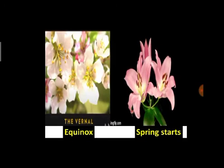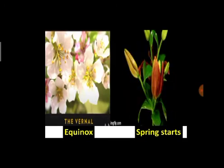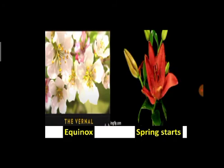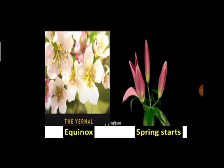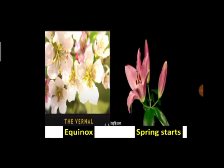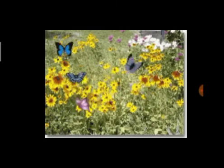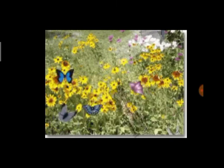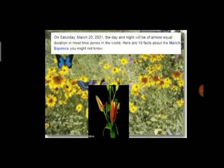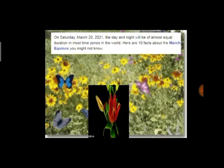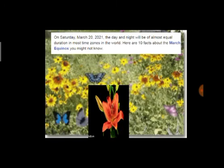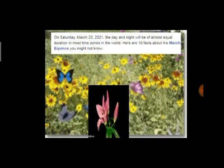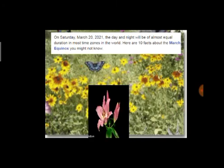Here you can see the spring equinox or vernal equinox, when spring starts. On March 20, 2021, the day and night are almost equal in duration.